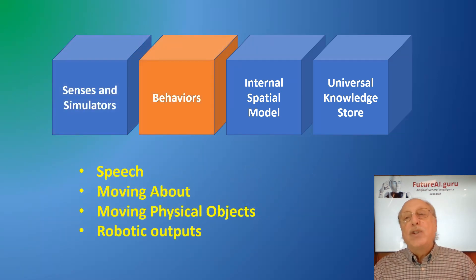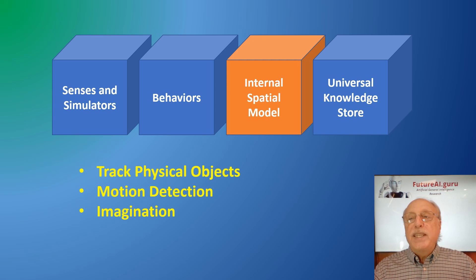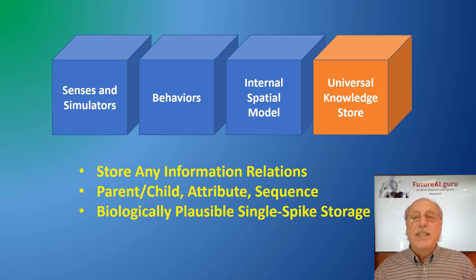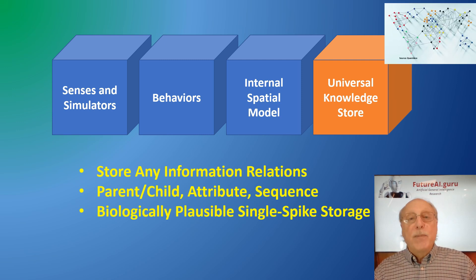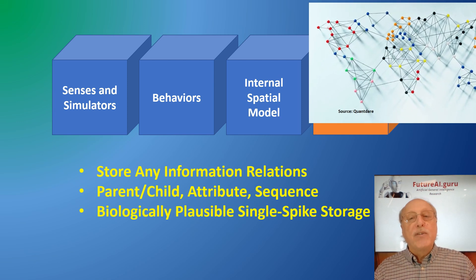There are modules to handle behaviors of speech, moving about, and moving objects in the environment. Internally there are modules for maintaining an internal spatial model of physical objects in the nearby environment. And finally the Universal Knowledge Store merges and stores all this multi-sensory input. Information is stored in the form of relationships between nodes in a graph structure.